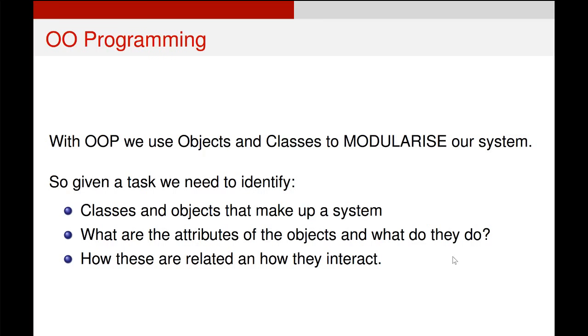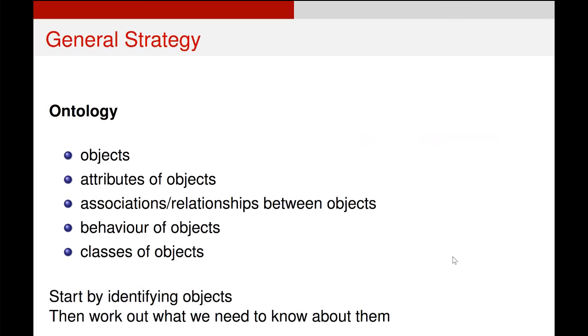What are the attributes of the objects? And then how are they related? And what do they do? So our general strategy will be to define the ontology of our problem. So what objects do we need? What are the attributes of those objects? What relationships do they have? How do they behave? And how can we group them all together?